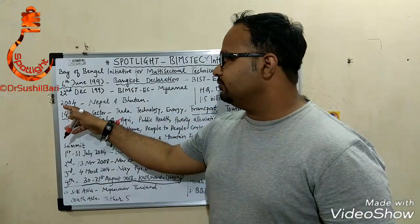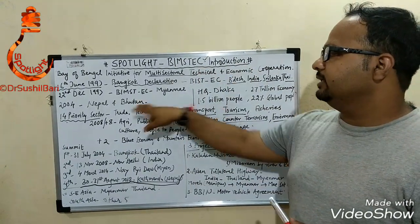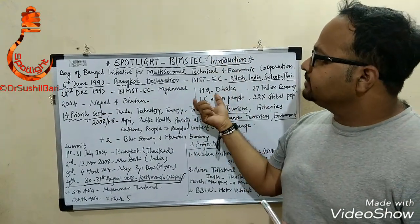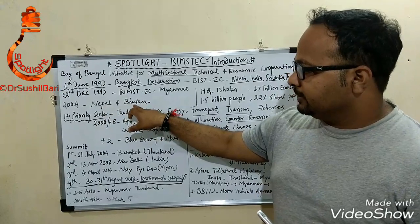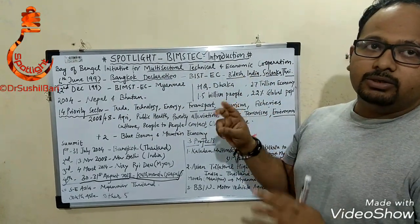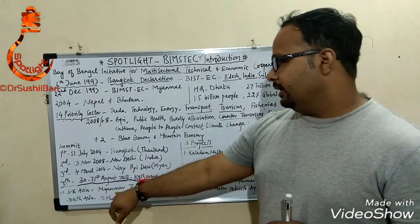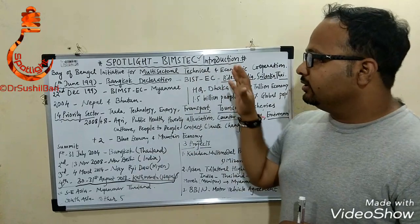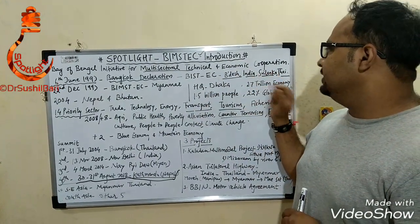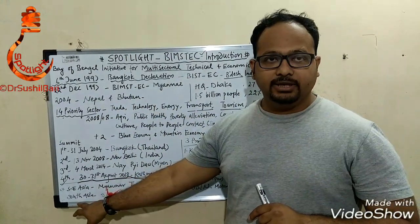In 2004, two more countries — Nepal and Bhutan — were added to the initial five, making it a seven-member BIMSTEC. Of these seven members, two belong to South East Asia: Myanmar and Thailand. The remaining five — Bangladesh, India, Sri Lanka, Nepal, and Bhutan — belong to South Asia.